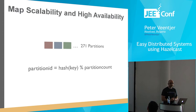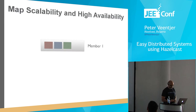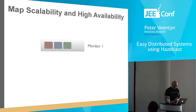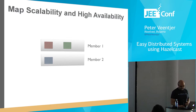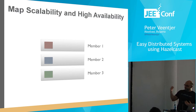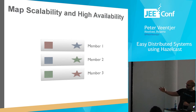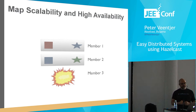Starting with a single member cluster, that member gets all partitions. When a second member joins, it automatically gets some of the partitions. When a third member joins, it also gets some partitions. To guarantee high availability, we also make copies — backups. So for member 3, its primary partition is also available on member 2 as a backup. If member 3 fails, the backup data is still available. The system will automatically restore itself and create a new backup to ensure there's always another backup available.